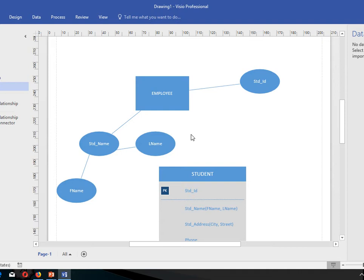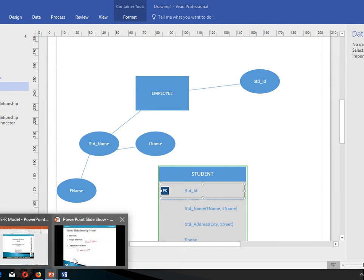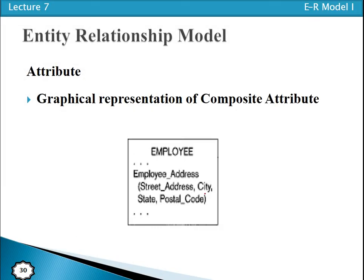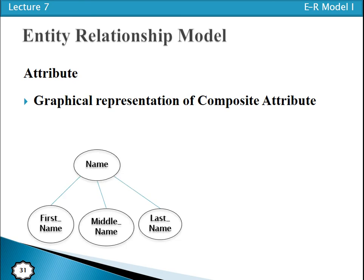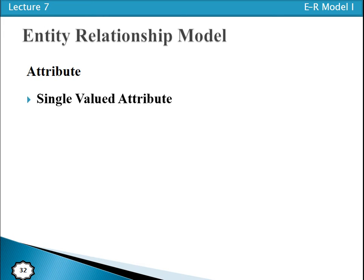Student ID is a simple attribute. Address is a composite attribute enclosed within parentheses, separated by comma: street address, city, state, province, and so on — that is the representation of a composite attribute. Name is also a composite attribute with components: first name, middle name, last name. Address components include street, city, state.